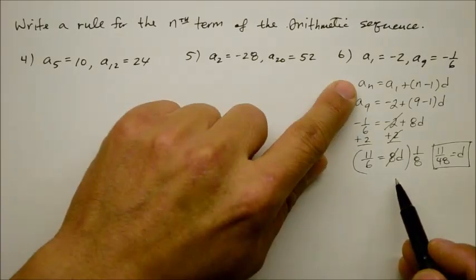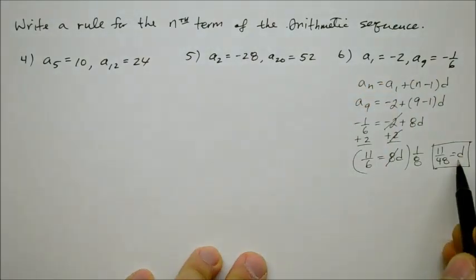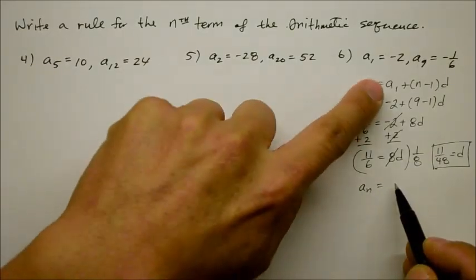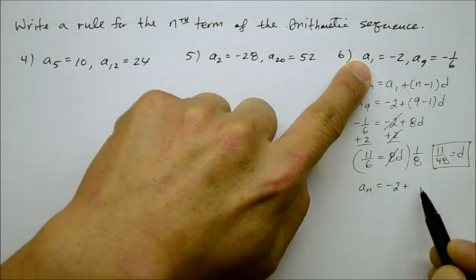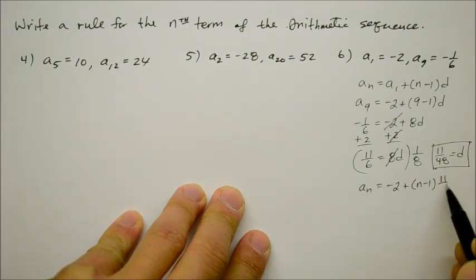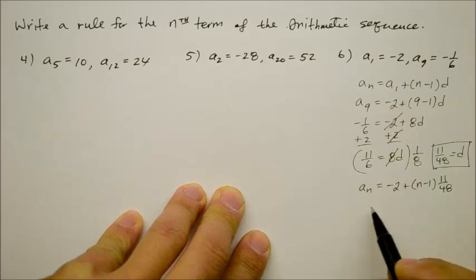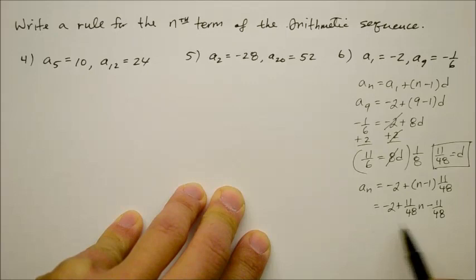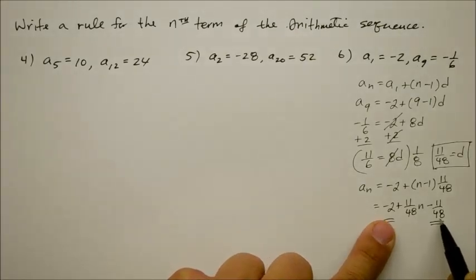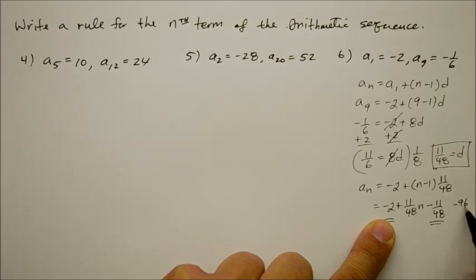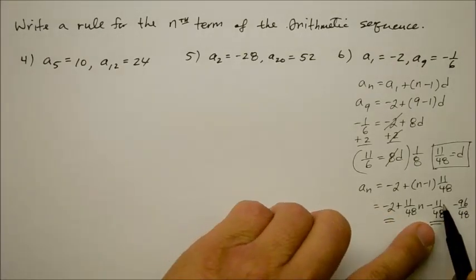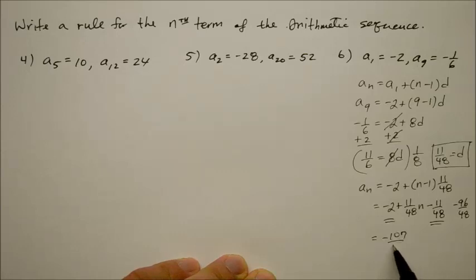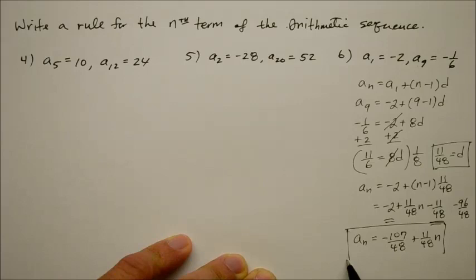So how do you come up with the rule? The rule is a sub n is equal to a sub 1 plus n minus 1 times the difference. We know the difference. So now we go: a sub n is equal to a sub 1, which is negative 2, plus n minus 1 times the difference, which is 11 over 48. Through the distributive property, we get negative 2 plus 11 over 48 n minus 11 over 48. When we combine the like terms — negative 2 and negative 11 over 48 — negative 2 is like saying negative 96 over 48. So negative 96 over 48 combined with negative 11 over 48 gives us negative 107 over 48. So the general rule is negative 107 over 48 plus 11 over 48 n.